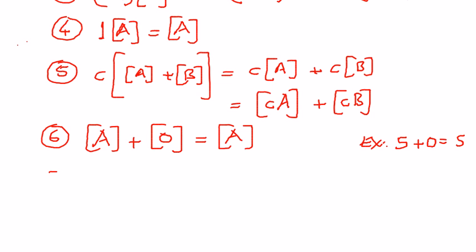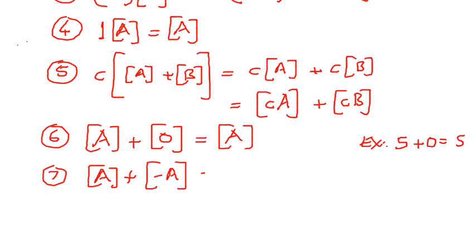The next property: if we have a matrix A and we add it to a matrix whose elements are equal to but opposite in sign to every element in matrix A, then the resulting matrix is going to be equal to a zero matrix — meaning all the elements in that resulting matrix are going to be zeros.